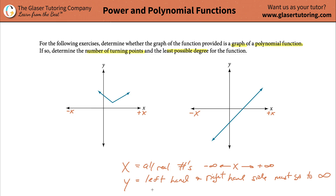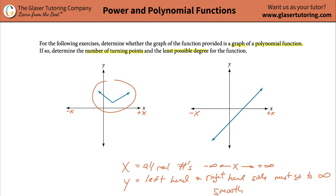Now there's one last criteria: it's got to be smooth. You can't have little jerk motions. Look at this graph — there's a little jerk motion right there, very jerky, like it makes a sharp turn. I want to emphasize that this is a sharp turning point. No sharp points — it's got to be smooth, no sharp points whatsoever. So this does not meet that last criteria, and therefore this is not a polynomial function. It actually turns out to be an absolute value function.